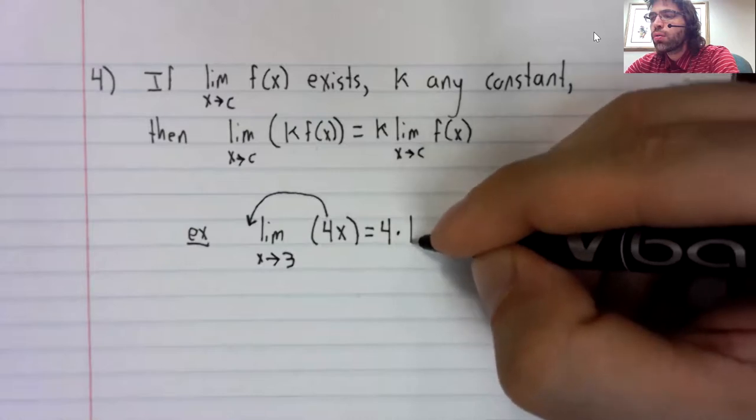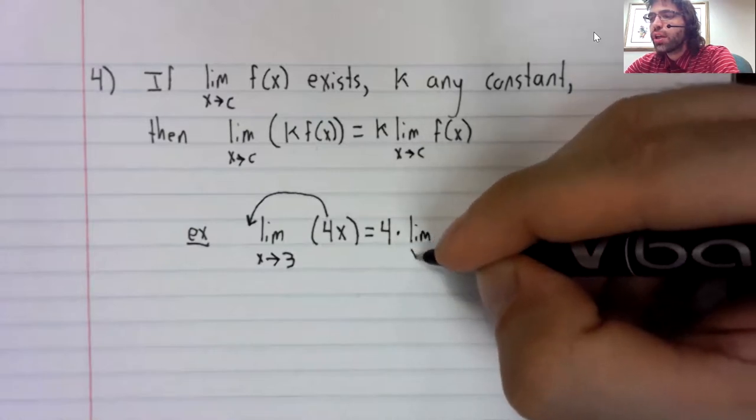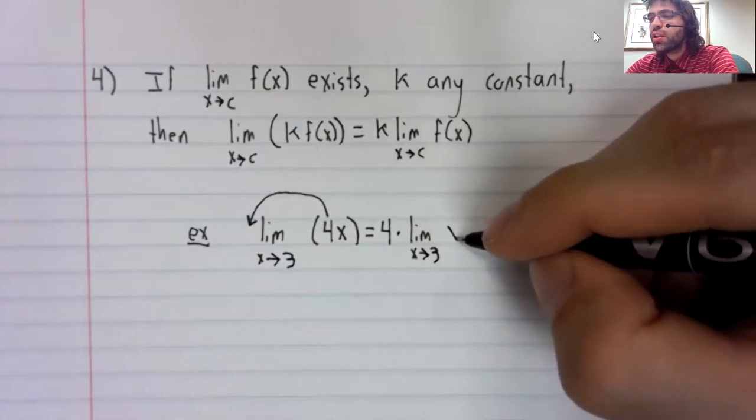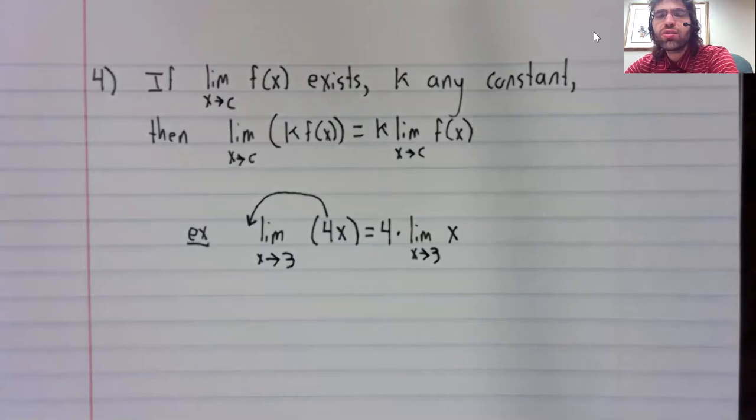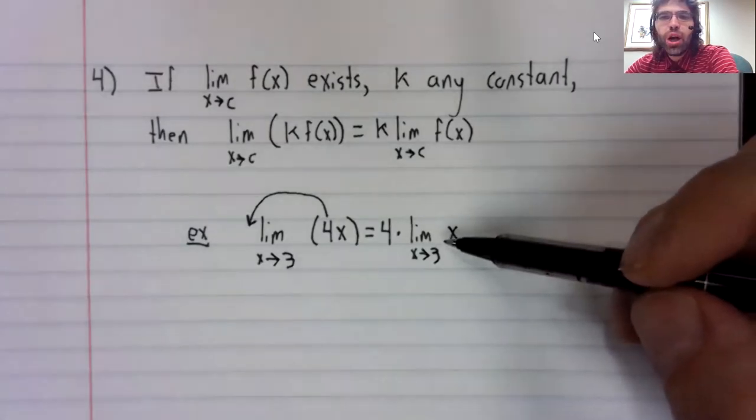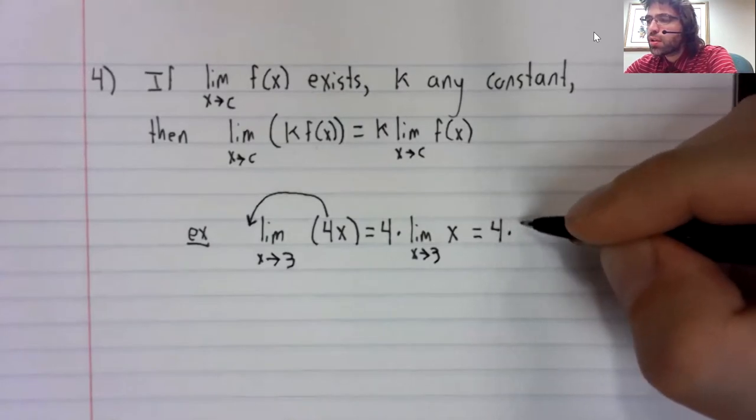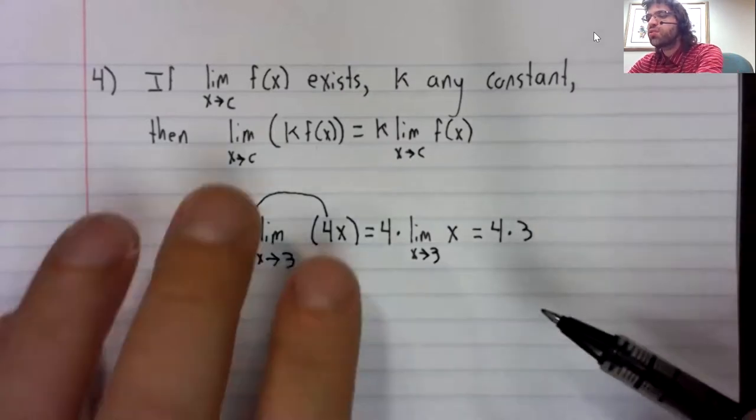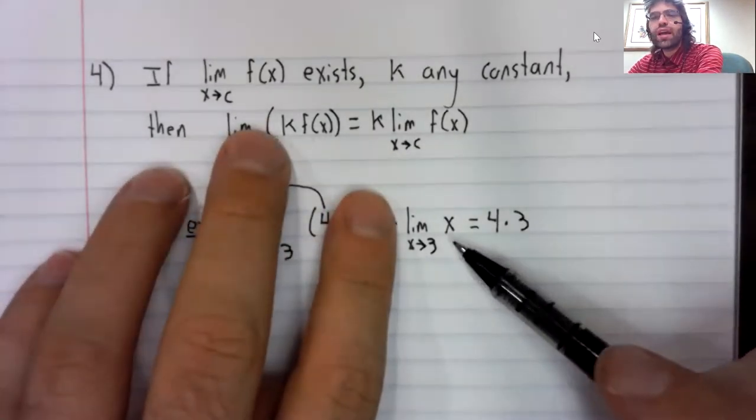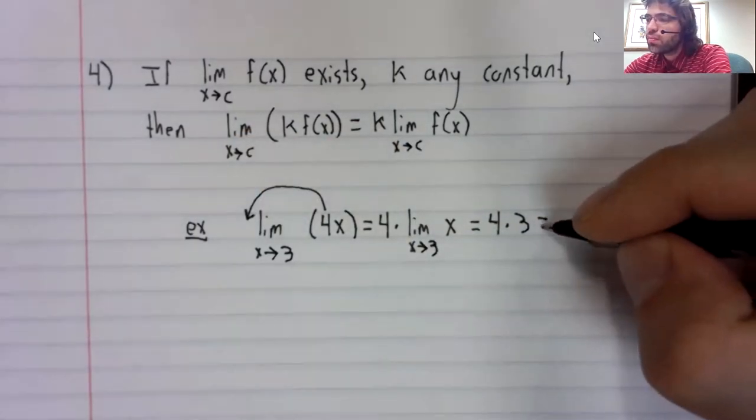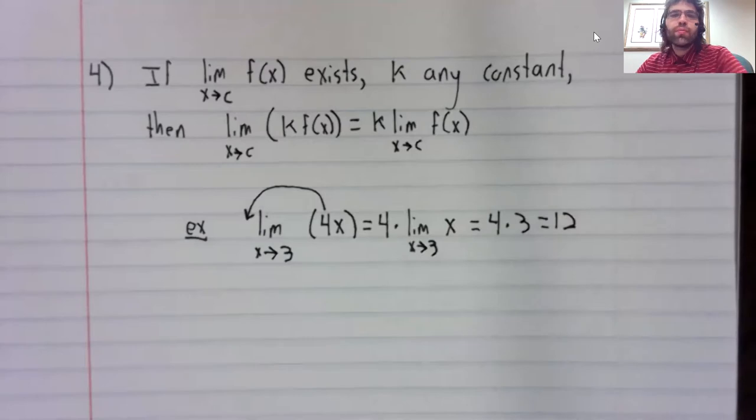This is four times the limit as x approaches three of x. This limit we know from rule two. The limit as x approaches three of x is just three. So our limit is twelve.